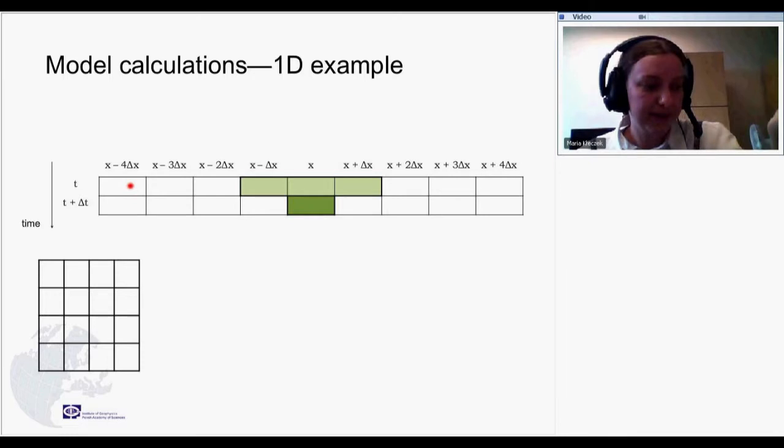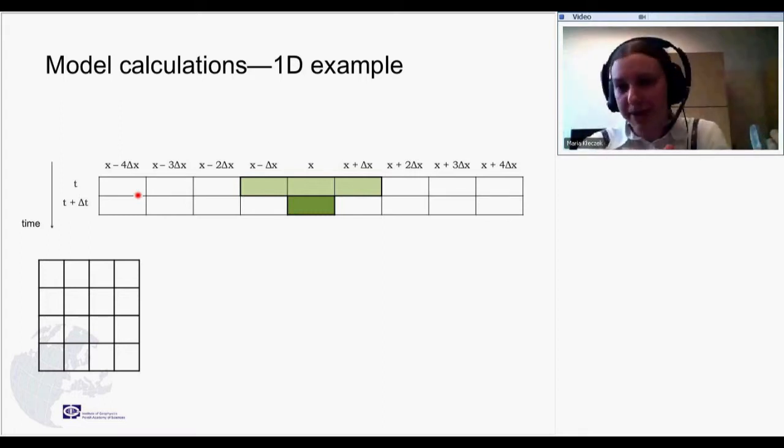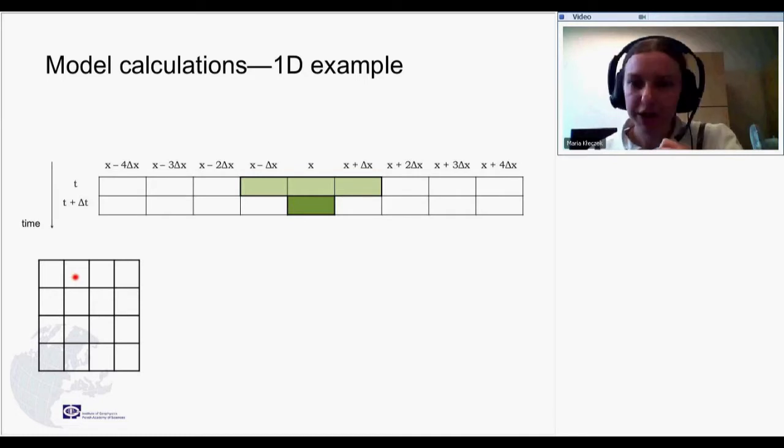And the simulation means basically calculating the values of all model variables for a river, for example, number of fish in each segment, for each segment or grid point, in each subsequent time step. How can we do this?